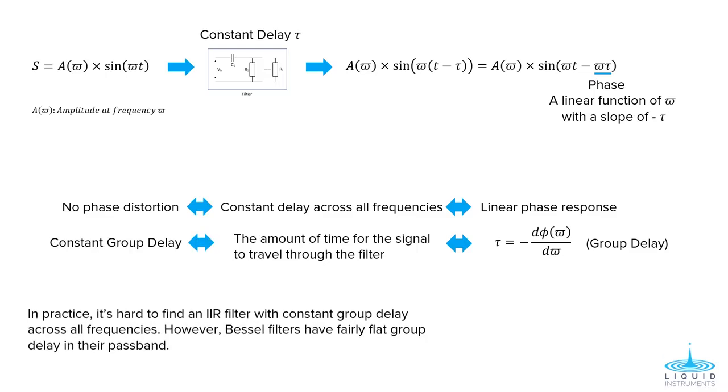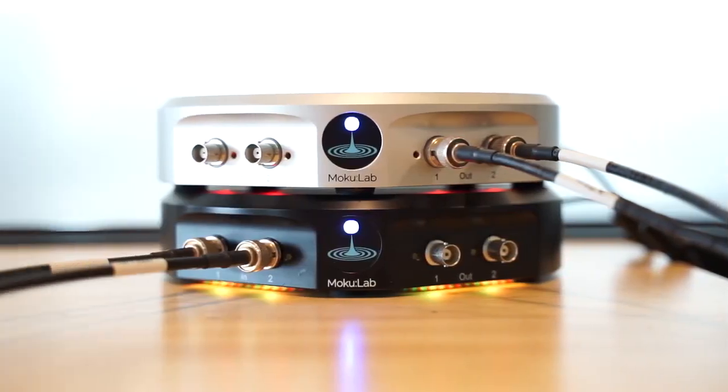In practice, it's hard to make an IIR filter with constant group delay across the entire frequency range. However, some filter types are known to have better phase response than others. Let's use two Moku labs to demonstrate. The top, silver Moku lab is used as a waveform generator and the lower, black Moku will be used as the digital filter box.